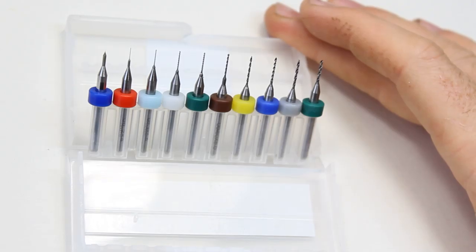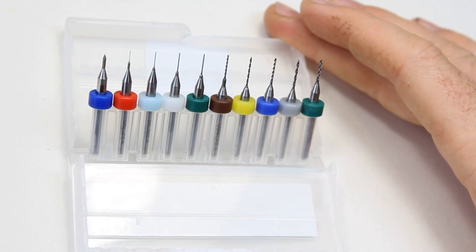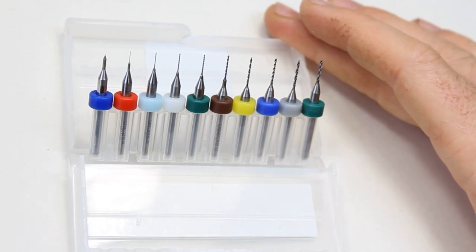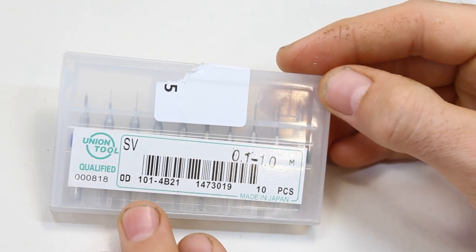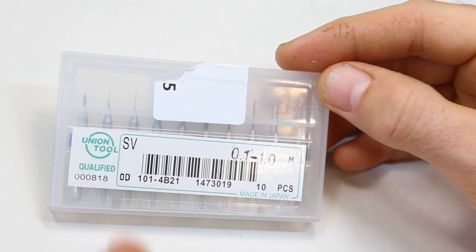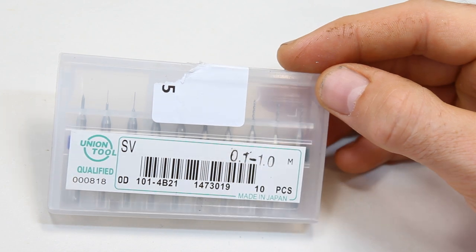So there you go, might be something of interest. I thought that might be worth showing. There's a little bit of technique on how to use them, that is what they are. And the actual name that I've got here is Union Tool Precision Drill Bits from 0.1mm up to 1mm.